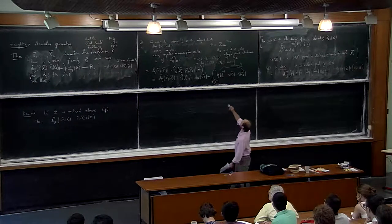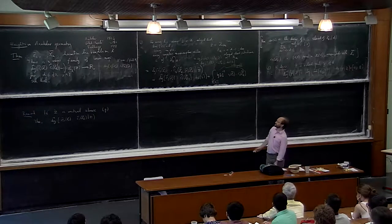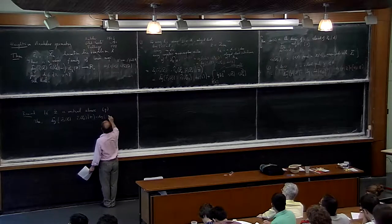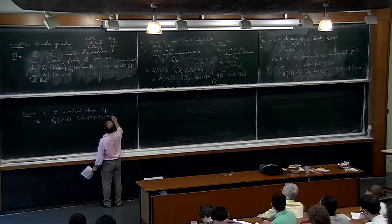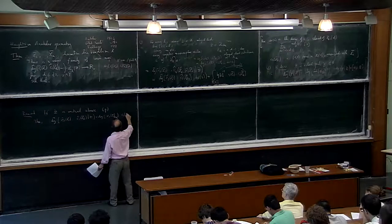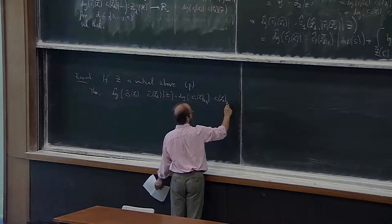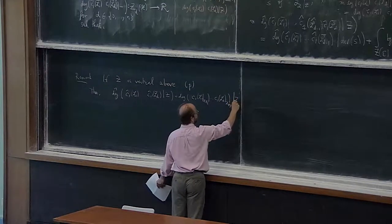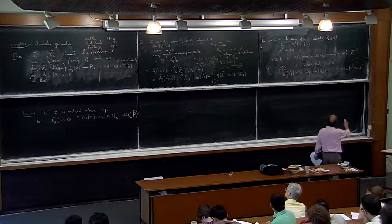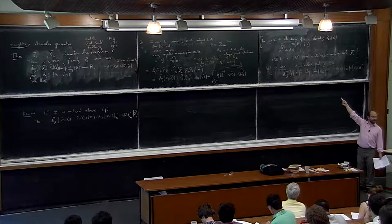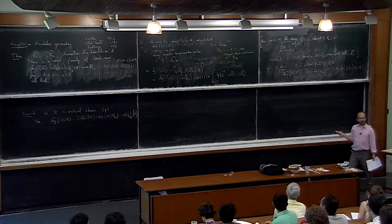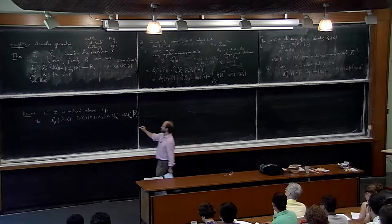So we get that the arithmetic degree equals the degree of c1(L1|_{X_{F_p}})...c1(L_d|_{X_{F_p}}) against Z. The two formulas match inductively, but at dimension zero, in one case I have the log of the cardinality of the residual field, and in the other I have the degree of the residual field over F_p. The relation between the two is just that I multiply by log p.